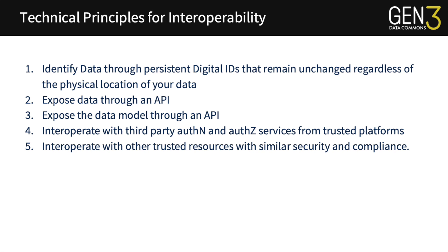Third, data must be ingested conforming to or along with a data model that defines the way data are organized and describes its properties so that external researchers can understand and properly interpret that data for reuse. Fourth, authentication and authorization must be standardized, secure, and consistent across platforms. The framework services supports trusted third-party authentication providers such as Google, ERA Commons, and InCommons, among others. Finally, all trusted resources within the ecosystem should abide by similar security and compliance standards. The ecosystem is only as secure as its weakest link, so for systems to interoperate, there must be an understanding that they'll share similar levels of security.